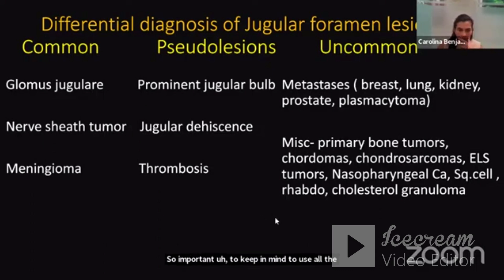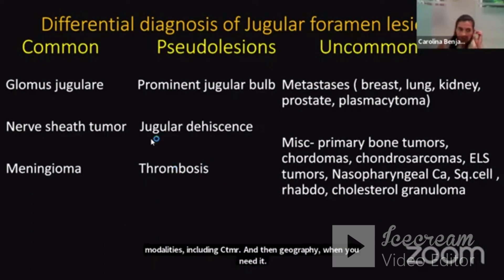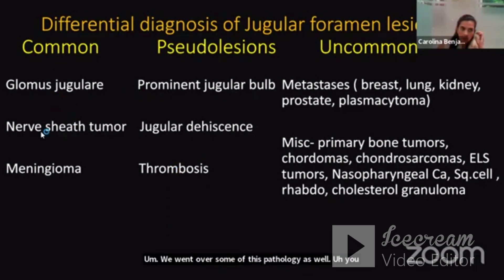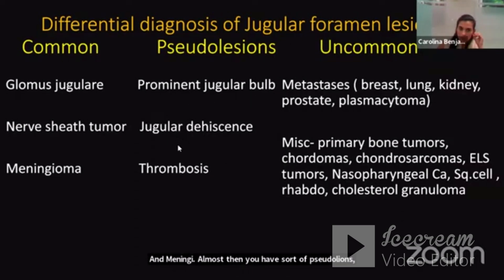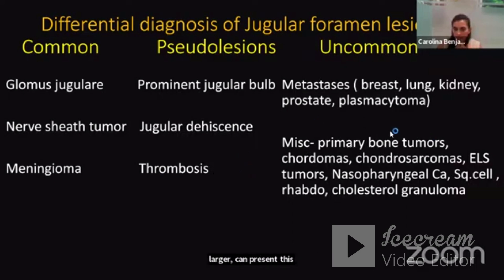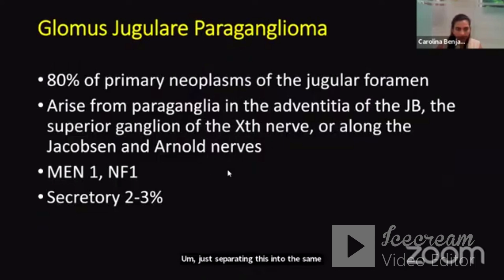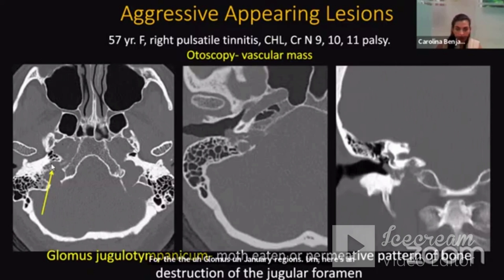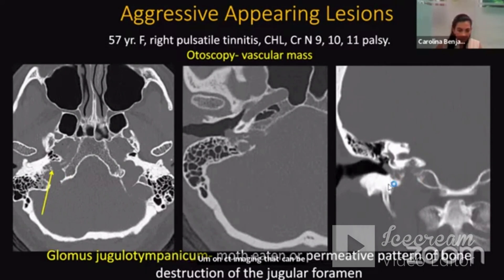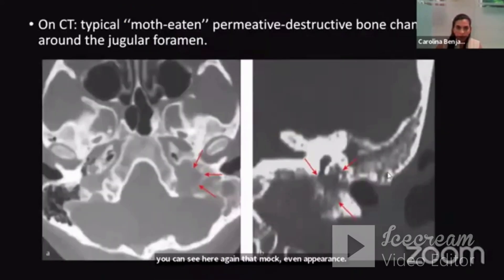Using all modalities — CT, MRI, and angiography — is critical. The common pathologies in this region include glomus jugulare tumors, schwannomas, and meningiomas. Pseudo-lesions include a high-riding jugular bulb, large dehiscence, large arachnoid granulations, and extensive thromboses. Less common but important are metastases and primary bone tumors. For glomus jugulare lesions on CT, a characteristic moth-eaten or permeative pattern of bone destruction is very helpful for diagnosis.